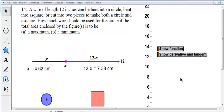I've been asked to do number 14. This is the one that was done in class. It says a wire of length 12 inches can be bent into a circle, a square, or cut into two pieces to make both a circle and a square.